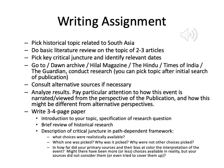And then you look at the critical juncture that you have examined — that's the part of the path-dependent framework you're examining. You look at the choices that were available: what choices were realistically available? There has to be several for it to be a critical juncture. Which one was picked? Why was it picked? Why were other choices not picked? And in how far did your primary sources and their bias color the interpretation of the event?